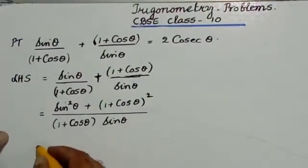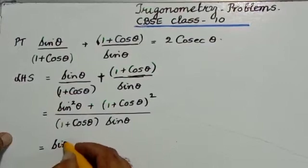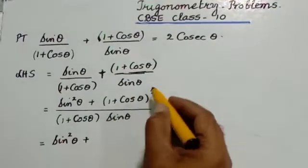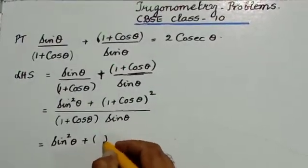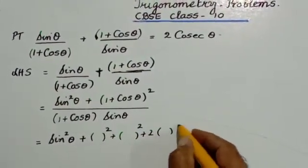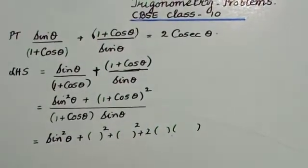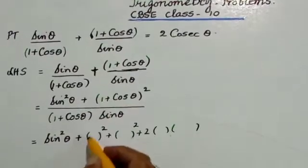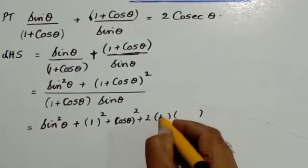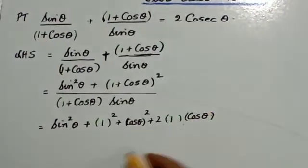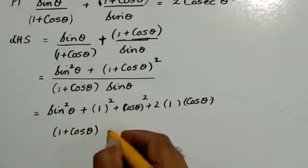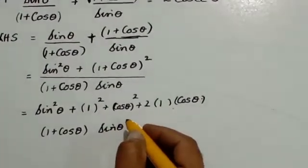That gives sin squared theta plus the expansion of (1 plus cos theta) squared. The second bracket is in the form (a plus b) whole squared, which equals a squared plus b squared plus 2ab. Instead of a I have 1, and instead of b I have cos theta. The whole expression is divided by 1 plus cos theta into sin theta.